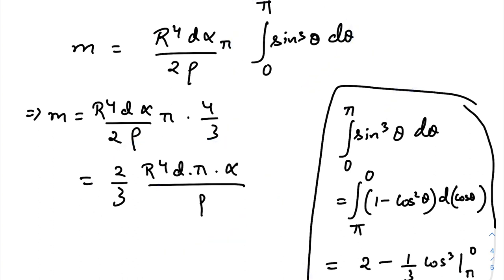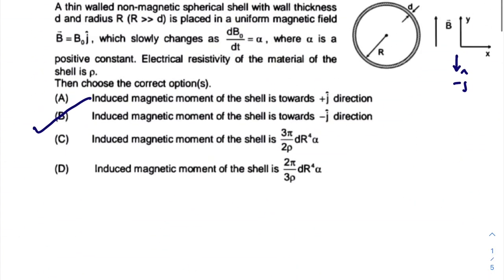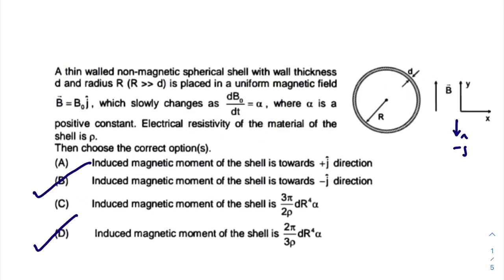So let us see which option is matching. Induced magnetic moment of the shell is this one. So option D is correct, easy. So this question was pretty much at the level of JEE Advanced.